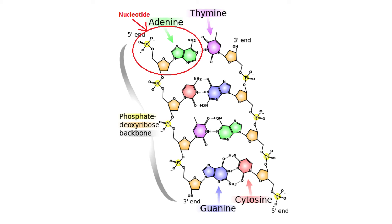What makes up every single nucleotide? One phosphate — you see the P in there, the yellow — one 5-carbon sugar, and some kind of nitrogen-containing base. That's the green, the pink, and the purple you see in the middle.